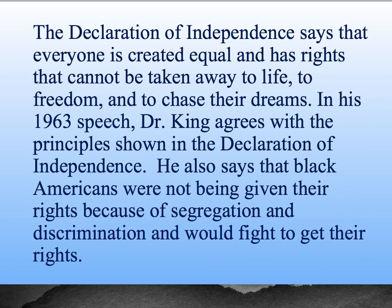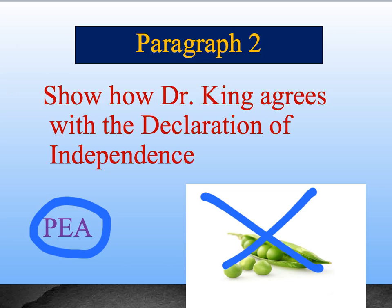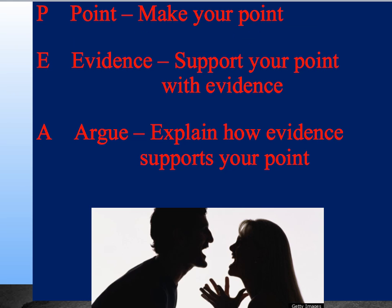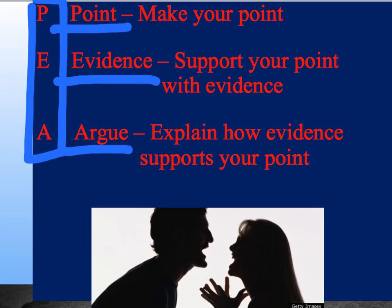In our second paragraph, we're going to show how Dr. King agrees with the Declaration of Independence. I've got another acronym: P. The P stands for point — we're going to make our point. In this case, our point is going to be that Dr. King agrees with what the Declaration was saying. But we're going to back it up with evidence — our opinion doesn't matter. We need to pick out some quotes or make some paraphrases to show what the text is saying, not us. And then finally, we're going to explain how this evidence supports our point. So that's the P: make our point, back it up with evidence, and then explain how the evidence supports the point we're making.